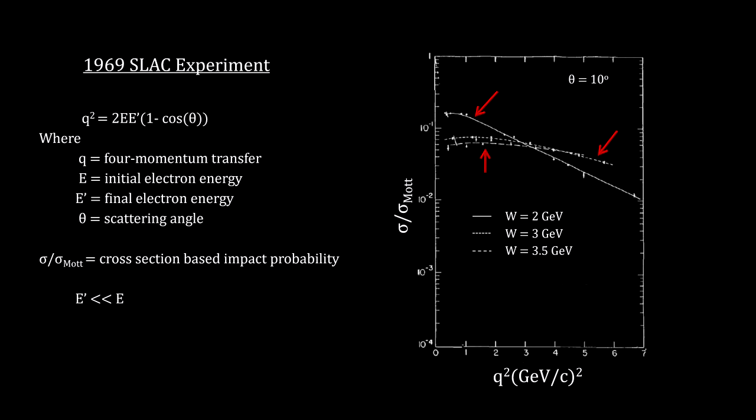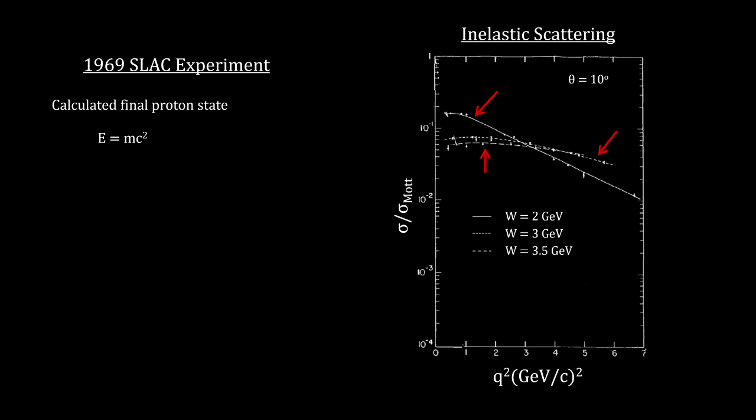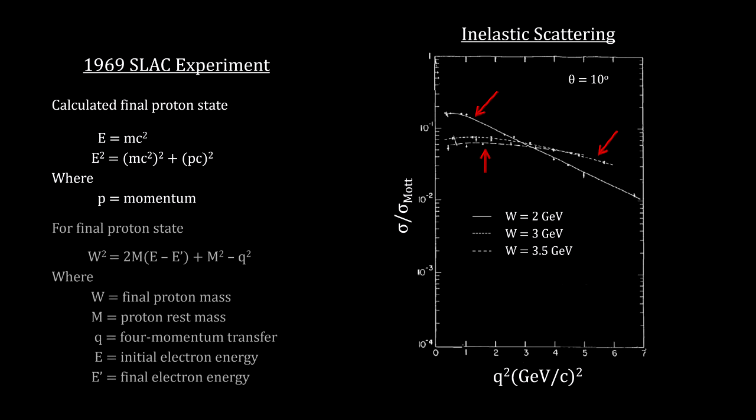To understand what's going on, we'll take a closer look at the final proton state. Einstein's formula E equals MC squared applies only to a mass at rest. For a moving particle, the energy-mass conversion includes the particle's momentum. We see that the final mass of the proton goes up with an increase in energy and goes down with an increase in momentum. If you think of mass as confined energy, what is happening is that the incoming electron's energy is being converted into increases in the mass of the proton. This is inelastic scattering, and the three resonances indicate the proton has three internal components.